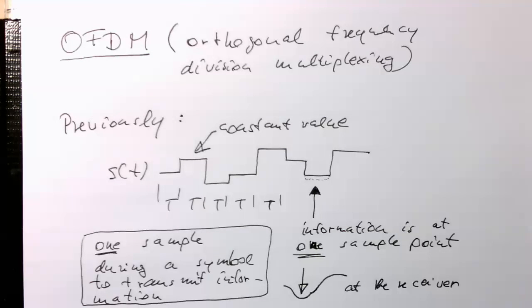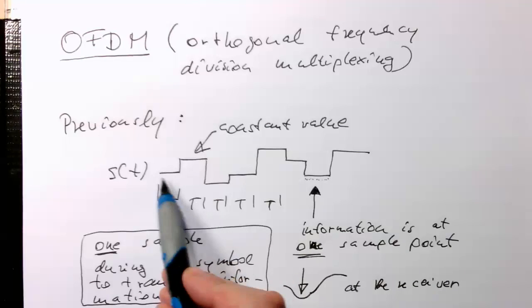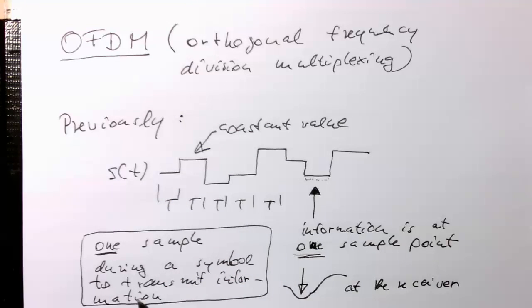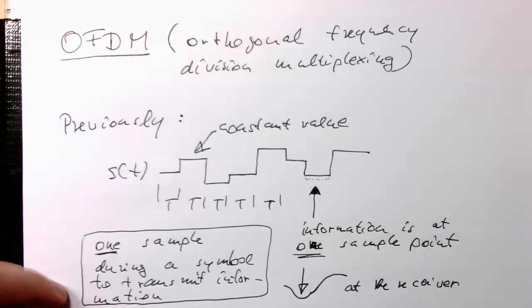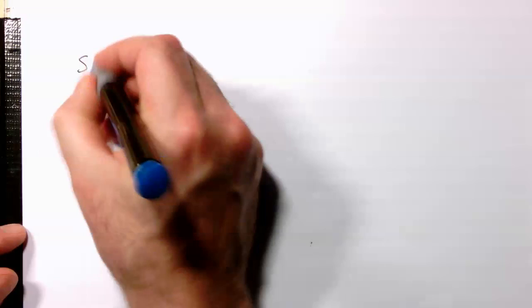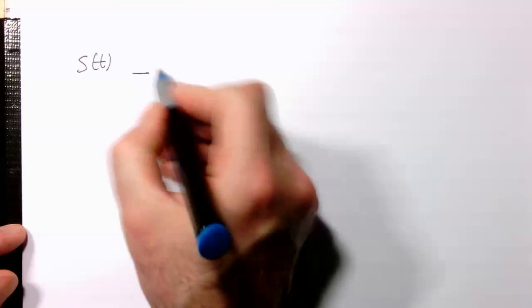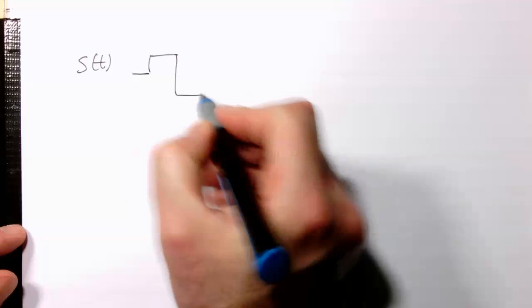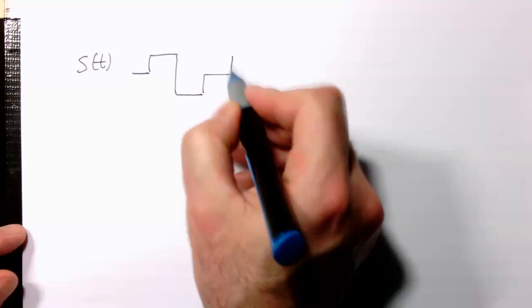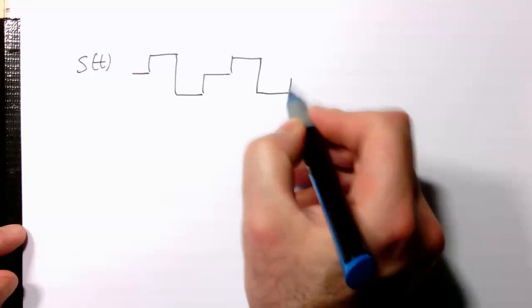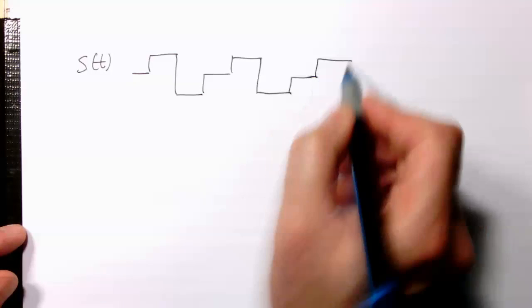Ideally what we would like to do is we would like to transmit loads of information during one sample duration. So let's just recap this quickly here. So the S of T. So we had something like this. And remember that's an important note that we really think of that this T is a sample system.